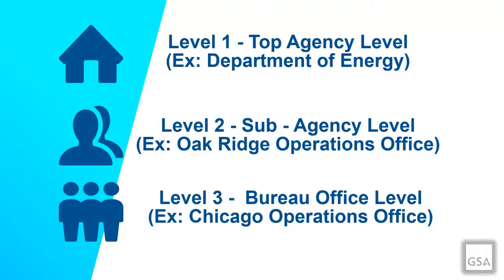Access to the records will depend on what agency and level the user is in — this is what we refer to as the agency hierarchy. Access to information will flow down from the top level. Level 1 is the top agency level, for example, the Department of Energy. Level 2 is the sub-agency level, for example, DOE Oak Ridge Operations Office. And level 3 is the Bureau Office level, for example, a Chicago Operations Office.